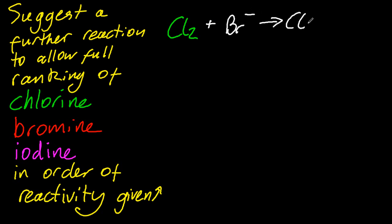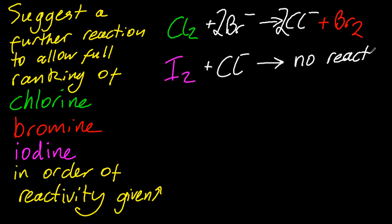So chlorine and bromide becomes chloride and bromine. Oh, most reactive ends up as an ion. And there's no reaction there. So essentially the products are the same as the reactants. So looking at the first equation, chlorine beats bromine because chlorine ends up as an ion.